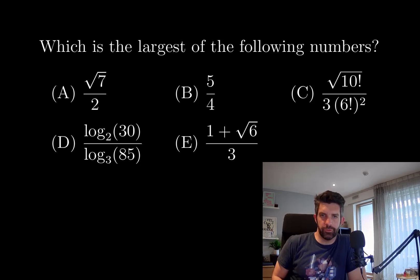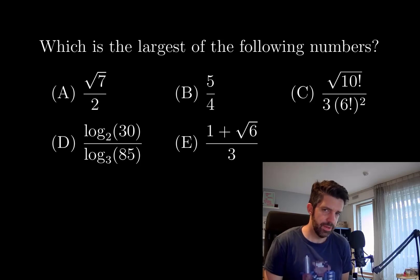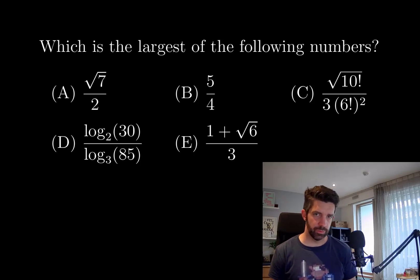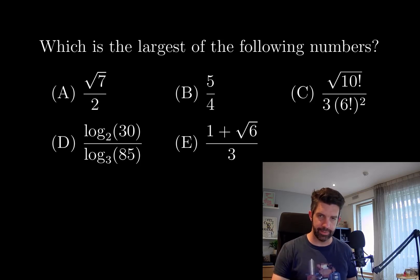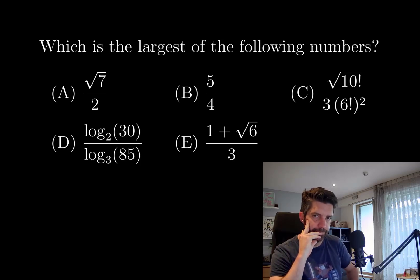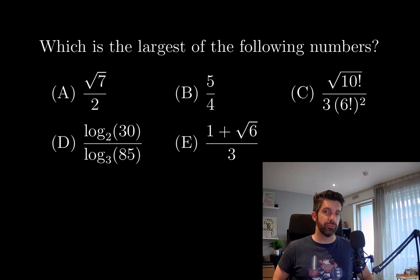Which is the largest of the following numbers? We're given five different numbers to choose from. I don't know why, but I am not very good at solving these style of problems — given a list of numbers, choose the one that's largest or smallest. So my first instinct here: I'll work left to right and compare options A and B, keeping whichever one is largest, then compare to C, and so on.